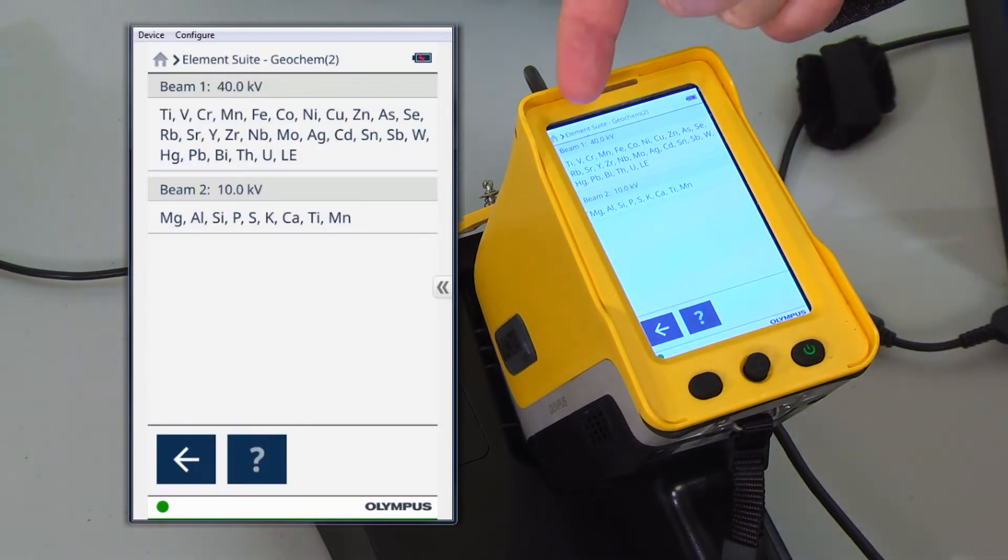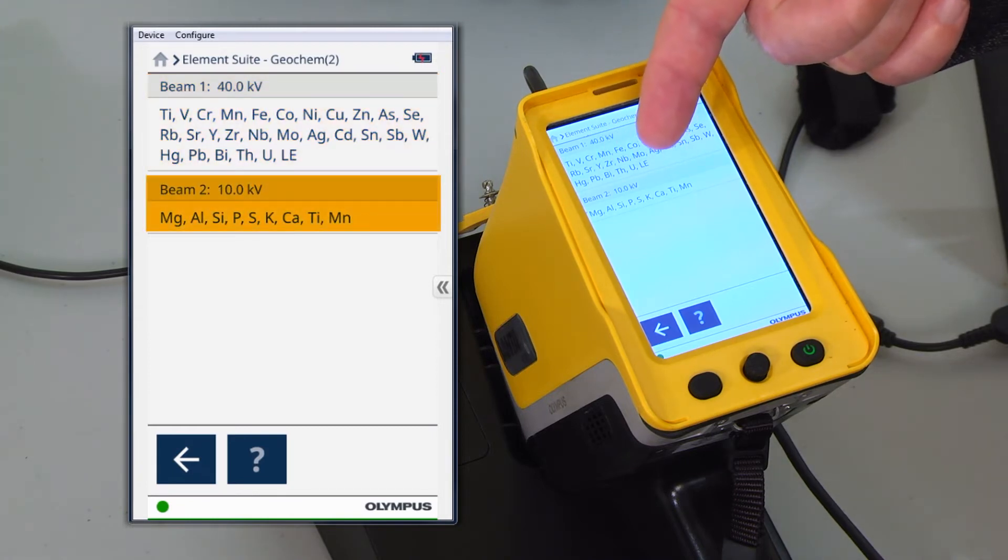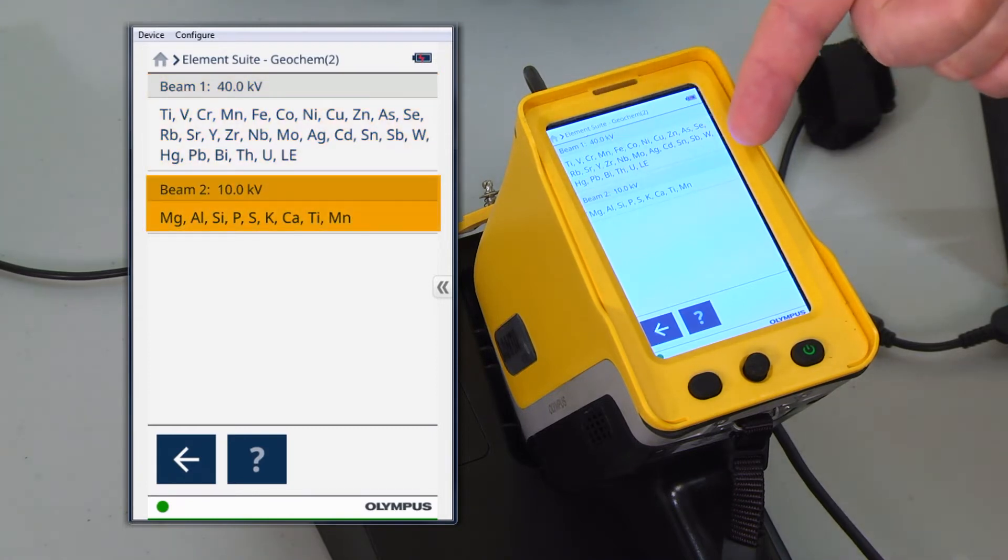And here's where we have the information for this Geochem two-beam setup. Beam one's measuring at 40 kilovolts. It's optimised for those elements. Beam two's running at 10 kV and is optimised for these elements.